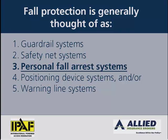When most people think about fall protection, it's generally thought of within the five main means of protection: guardrail systems, safety net systems, personal fall arrest systems, positioning devices, and warning line systems. We're going to focus in on personal fall arrest systems.